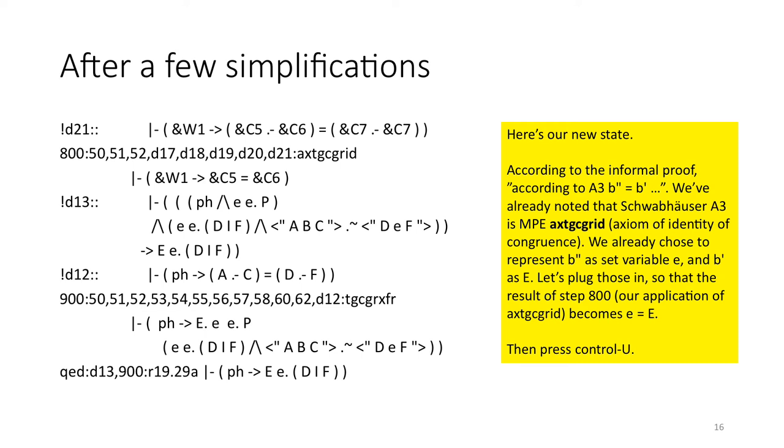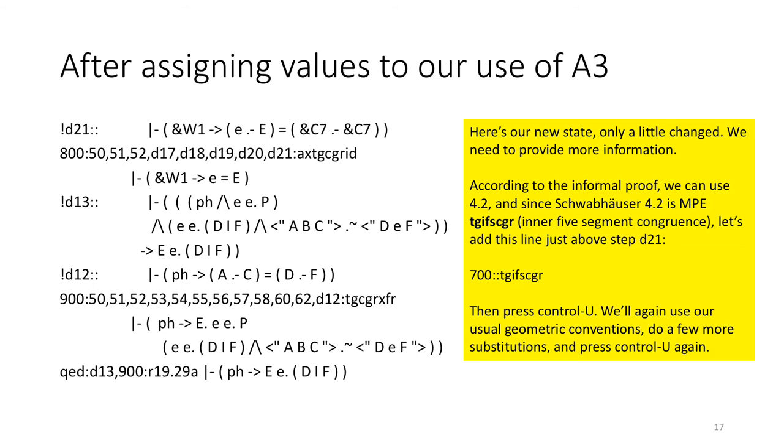Here's our new state. According to the informal proof, according to A3, B double prime equals B prime. We've already noticed that Schwabhauser A3 is MPE AXTGCRID, the axiom of identity of congruence. We already chose to represent B double prime as set variable E and B single prime as E. So let's plug those in, so that the result of step 800, our application, becomes little e equals big E. Then press CTRL-U. Here's our new state. It's only a little changed. We need to provide some more information.